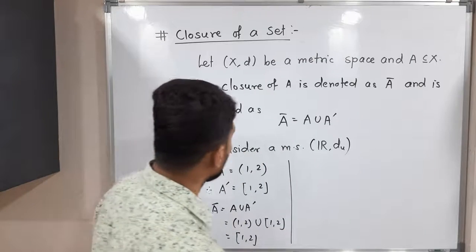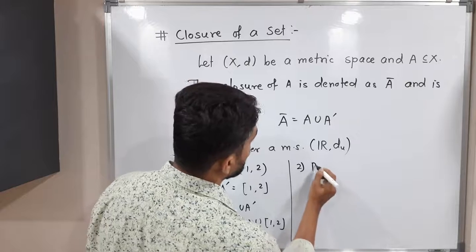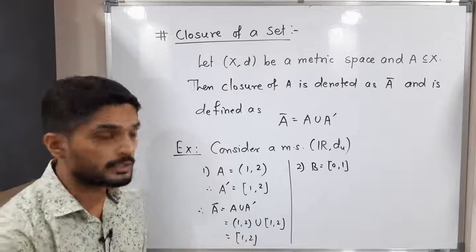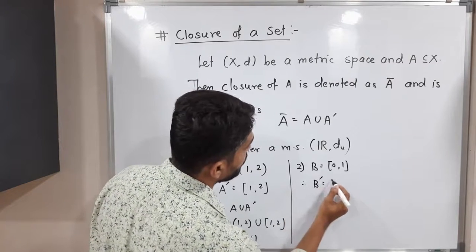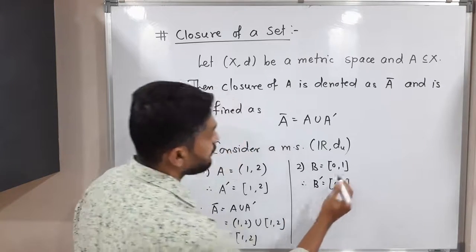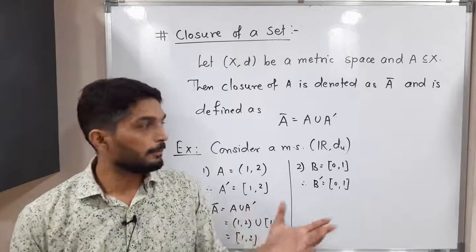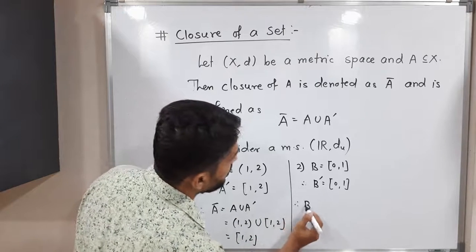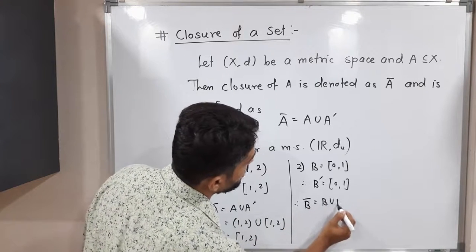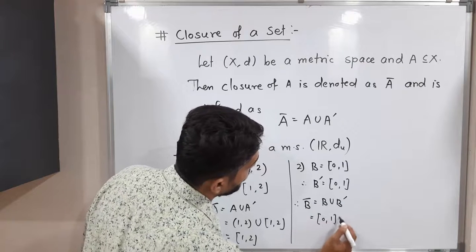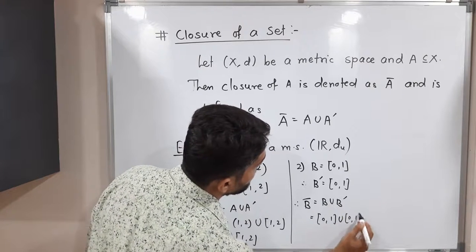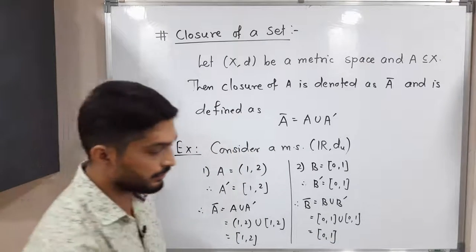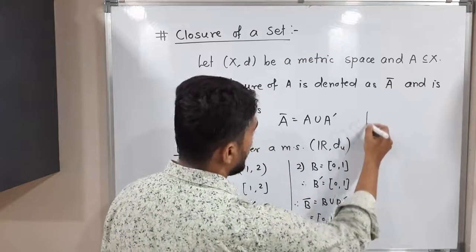Let us discuss the second example. I will consider B equal to the closed interval [0, 1]. Now B', the set of all limit points — for a closed set, all points will be limit points — so B' = [0, 1] as well. Therefore B̄ = B ∪ B' = [0,1] ∪ [0,1] = [0, 1]. Both sets are the same, so the union is just [0, 1].